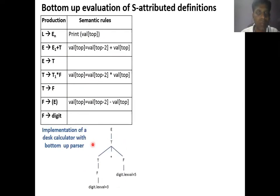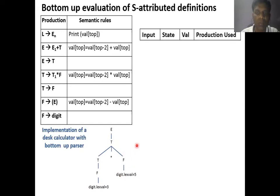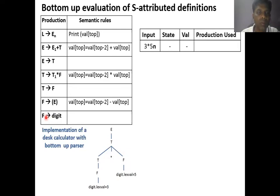Using a simple calculator example, for input '3 * 5': E is derived by T, T is derived by T * F. By the bottom-up parser: 3 is reduced to F, F is reduced to T, 5 is reduced to F, then T * F is reduced to T, and T is reduced to E. The reading pointer starts at 3. Encountering 3, I store it into the top of the stack with value 3. Then I encounter digit, which is reduced to F with the value kept as is.